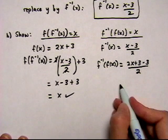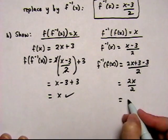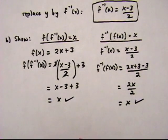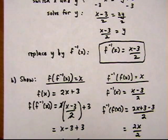The 3's cancel out, leaving us 2x over 2. And the 2's cancel out, leaving us x. So yes, it worked out. We got x back in both cases, which means we correctly found the inverse function of f(x).